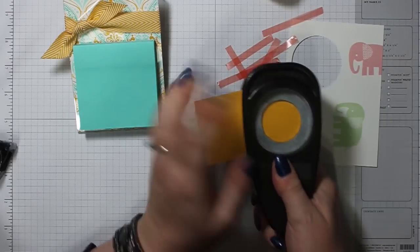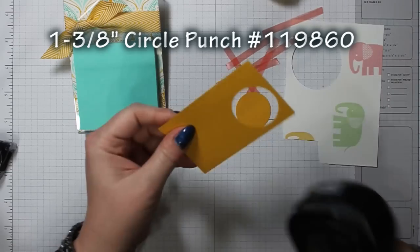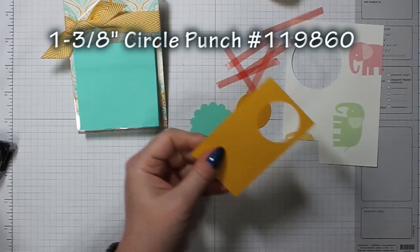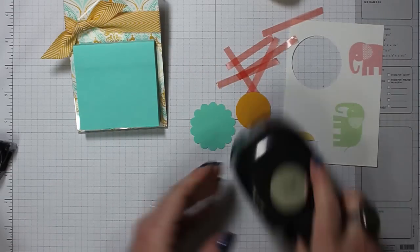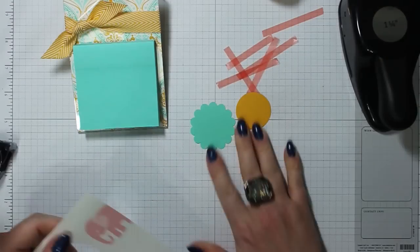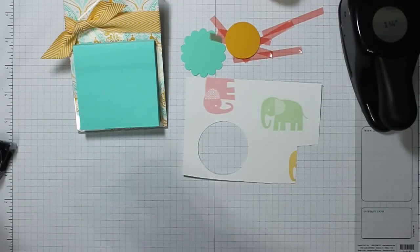And then this is the one and three-eighths inch punch, and then I always do my initial with the one and a quarter inch punch, of course. Because I'm stamping, I'm going to stamp first and then punch.